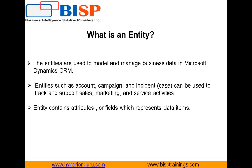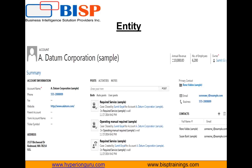Each entity contains a set of attributes or fields, and each attribute represents a data item. For example, this is an account entity and in this account entity we have account name, we have address, we have owner ID attribute.